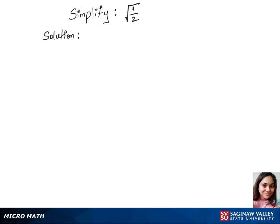To simplify square root of 1 over 2, we'll write our first step by separating the square root over the numerator and denominator, which is root 1 over root 2. Now let's rationalize this with the denominator: root 1 over root 2 times root 2 over root 2.